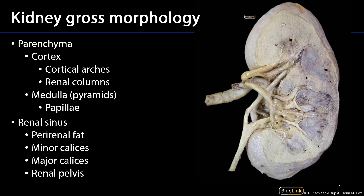The parenchyma, or physiologically active portion of the tissue that comprises the kidney, is divided into the cortex and the medulla. The cortex is the tissue which surrounds the medulla, and on gross specimens it is often difficult to discern cortex from medulla. The medulla is organized into pyramids — we can see a couple of renal pyramids on this specimen — and the cortex surrounds the pyramids on various sides.